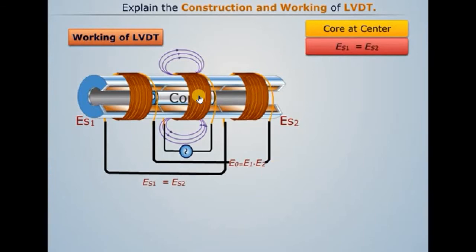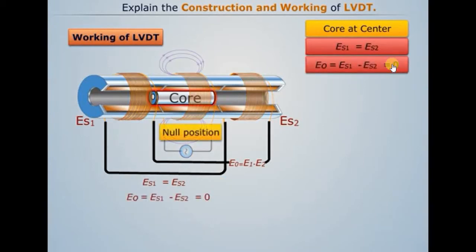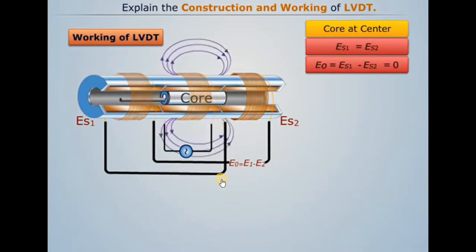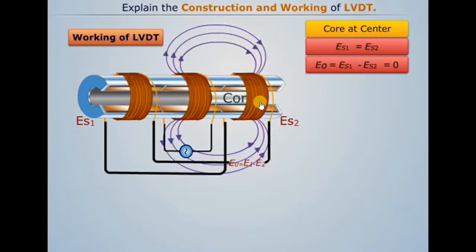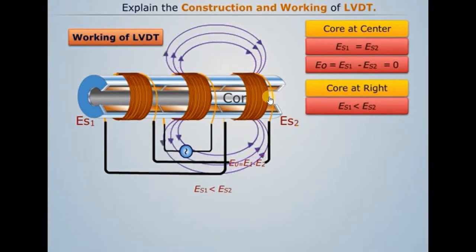When the flux linking with both secondary windings is equal, ES1 is equal to ES2. The total output EMF E0 equals ES1 minus ES2. Since ES1 equals ES2 at the null position, the total EMF equals zero. Therefore, at the null position there is no displacement and EMF output is zero.